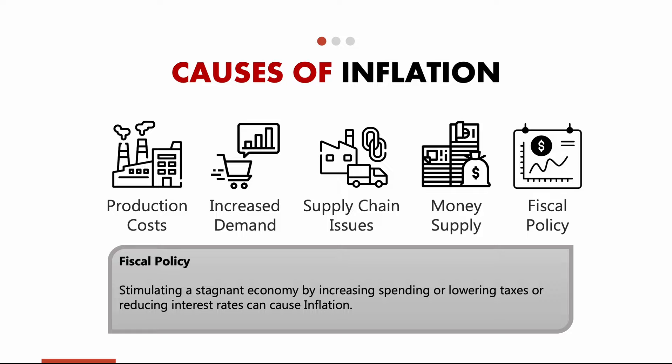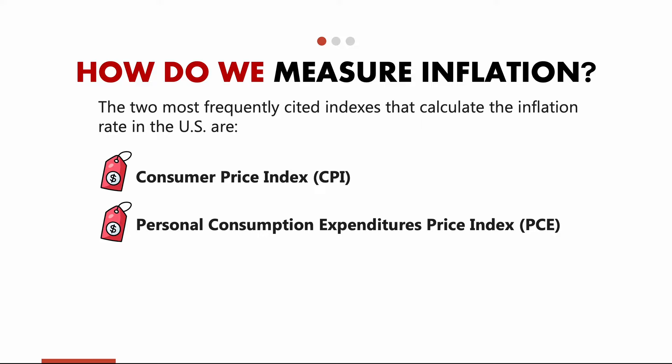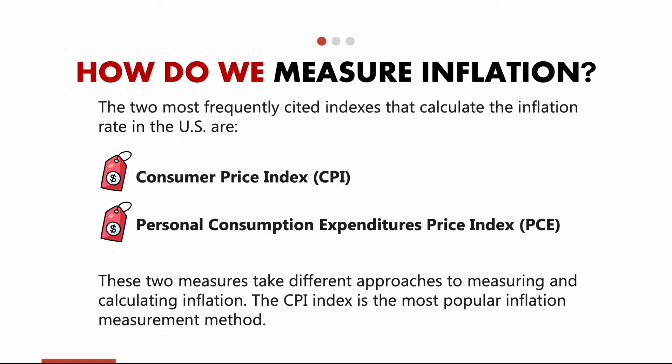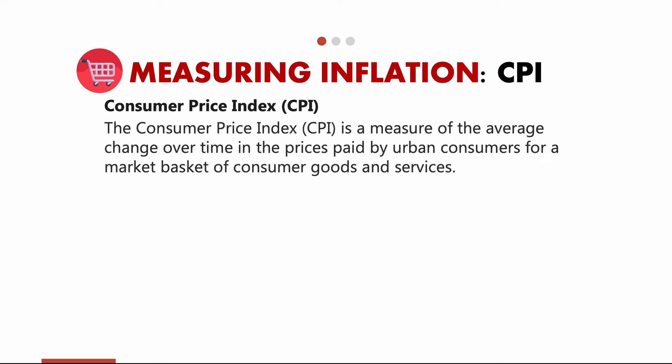So how do we measure inflation? There are two indexes used in calculating the inflation rate in the US. The first is the Consumer Price Index, or CPI, and the second is the Personal Consumption Expenditures Price Index, or PCE. Both measures have their own approach to calculating inflation. While CPI is the most popular, the Fed prefers PCE. CPI is a measure of average price change over time in the prices paid by urban consumers for a basket of goods and services.